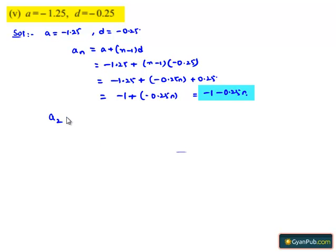Therefore, in order to get the second term, we need to write 2 instead of n. That will be -1 - 0.25(2), which is equal to -1 - 0.5, which is nothing but -1.5.